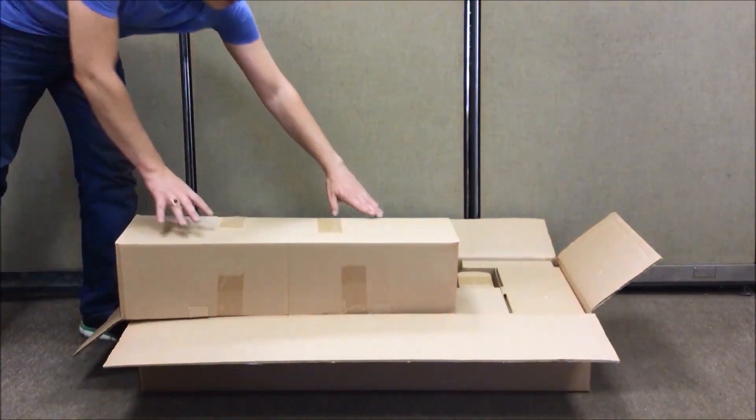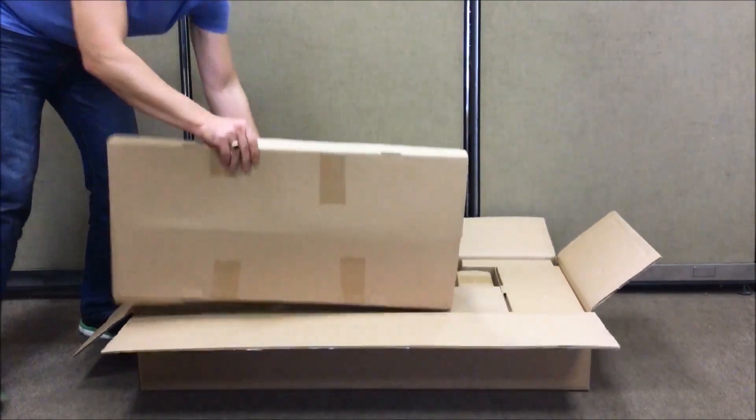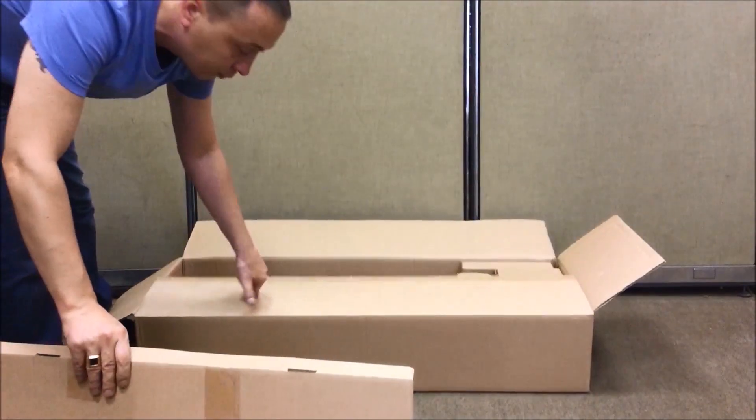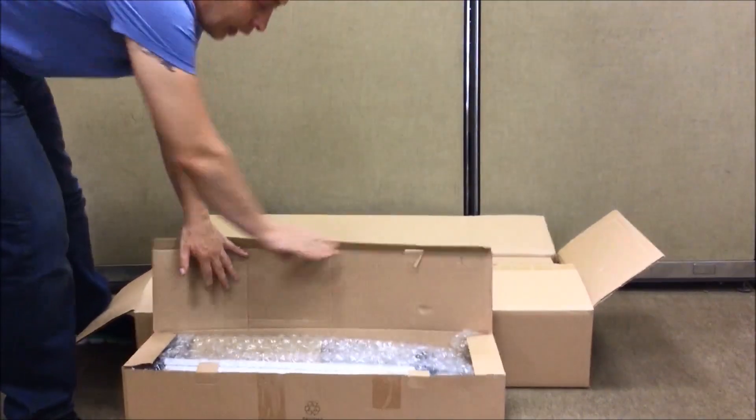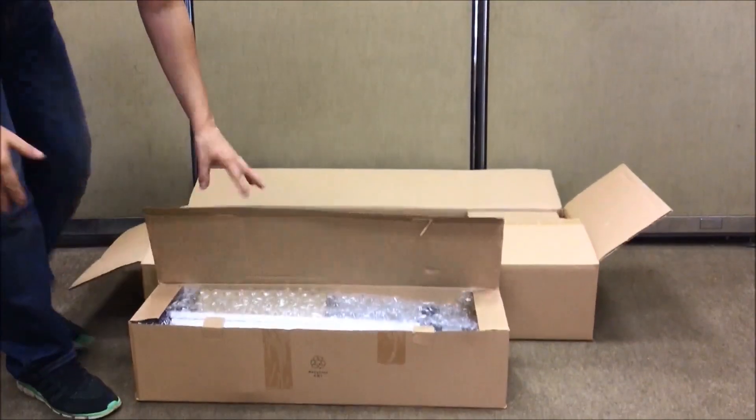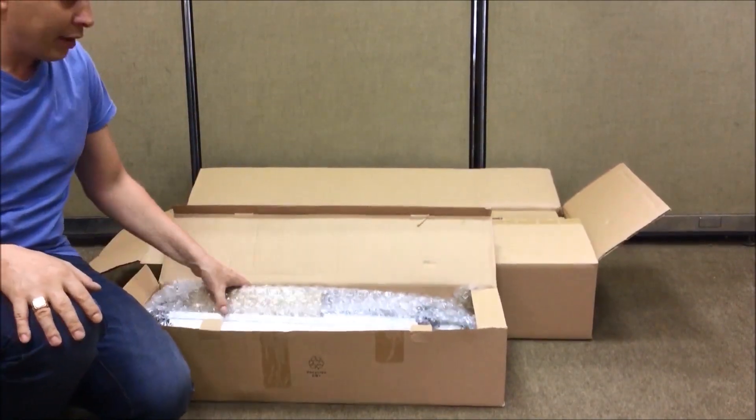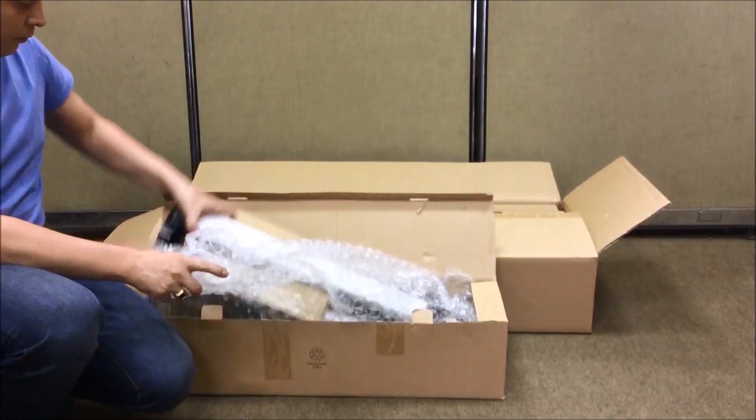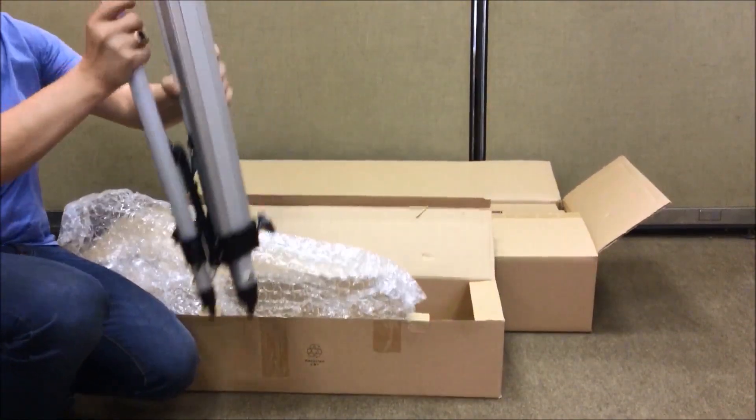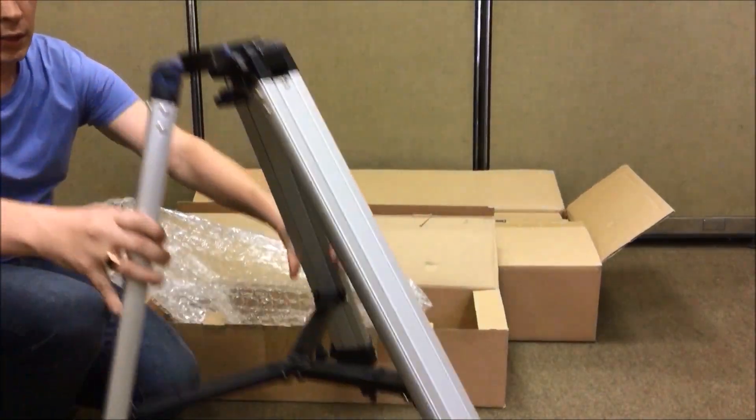First, let's unpack and set up the tripod. This box holds an aluminum tripod and accessory tray. Assembling the tripod is very easy. Just take it out of the box, spread its legs, and the tripod is ready.